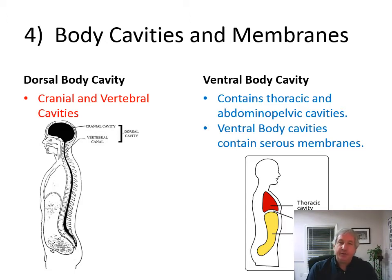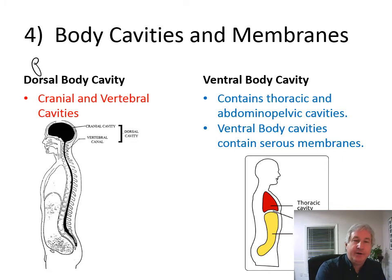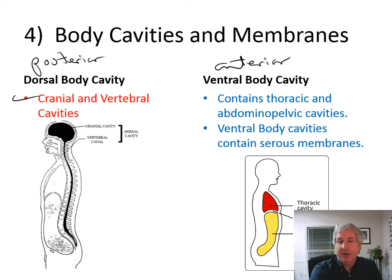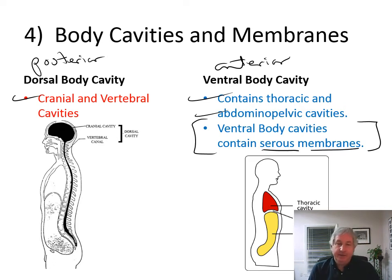We're going to go on to body cavities and membranes. So the dorsal body cavity and the ventral body cavity. Dorsal would be posterior, and ventral is anterior. The dorsal body cavity consists of the cranial and vertebral cavities. The ventral body cavity contains the thoracic and abdominal pelvic cavities. The ventral body cavities also contain something called serous membranes, and we're going to talk about what a serous membrane is as we go on.